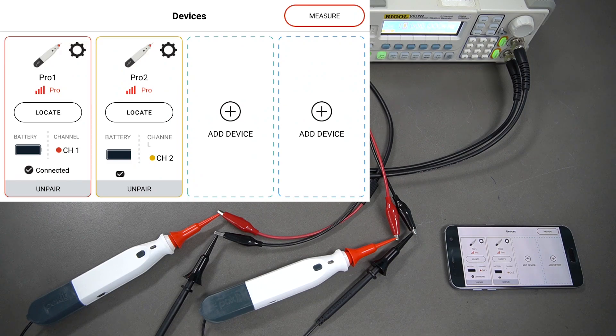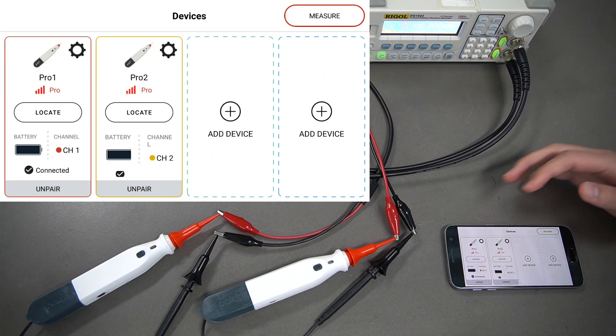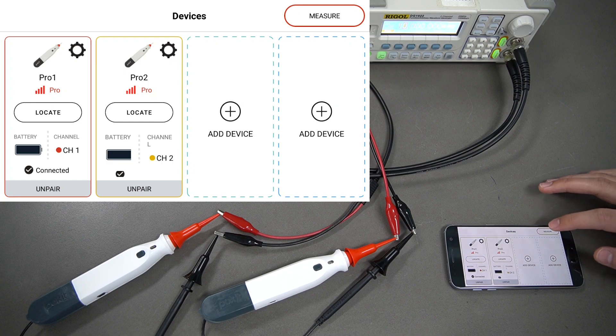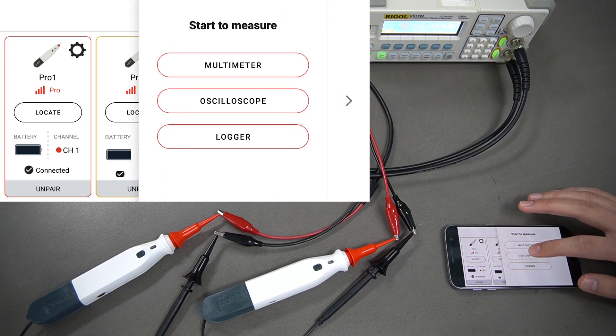In this user guide, we'll be taking a look at how to use Pocket Pro's oscilloscope function. I've got two Pocket Pros set up here, Pocket Pro 1 and Pocket Pro 2. To enter oscilloscope mode, press the measure button at the top right, then select oscilloscope.